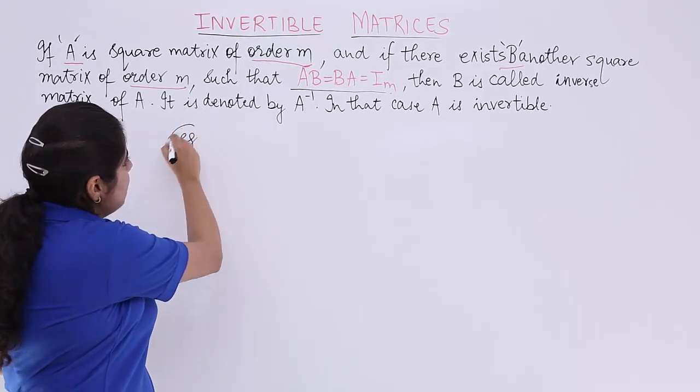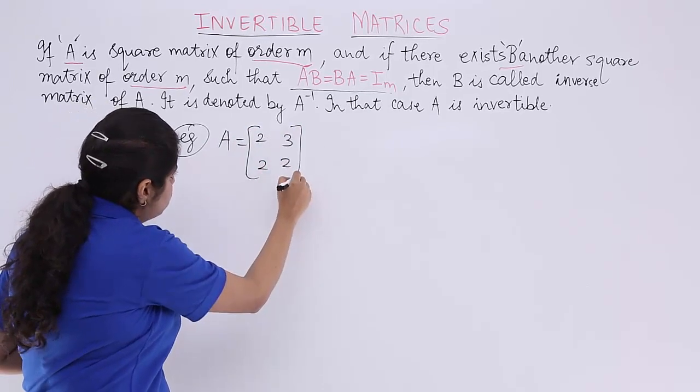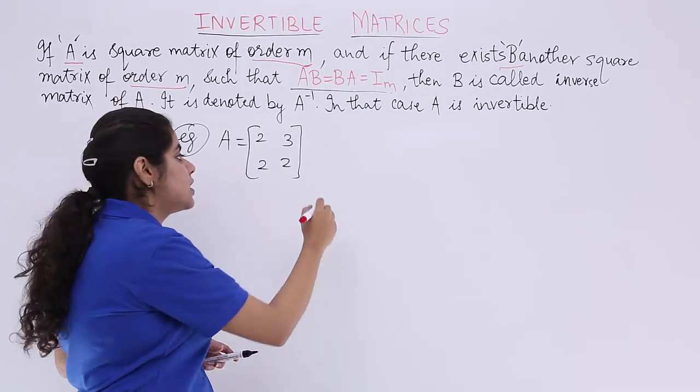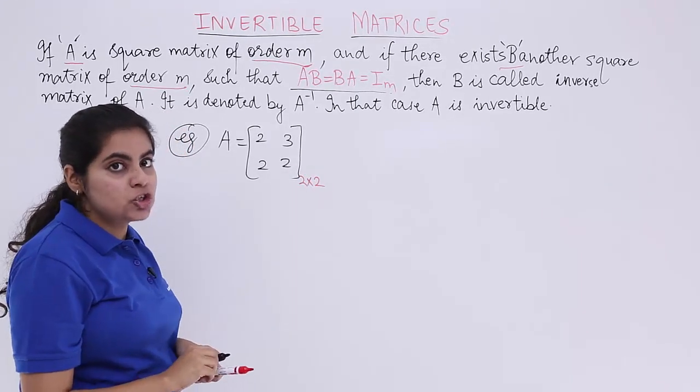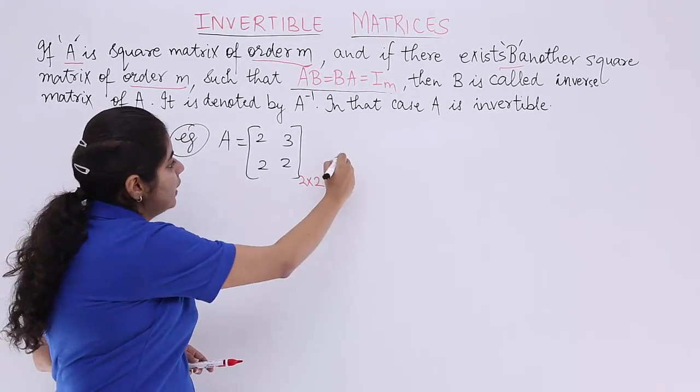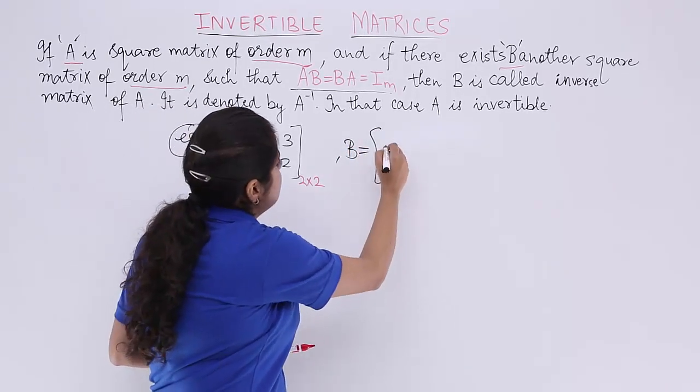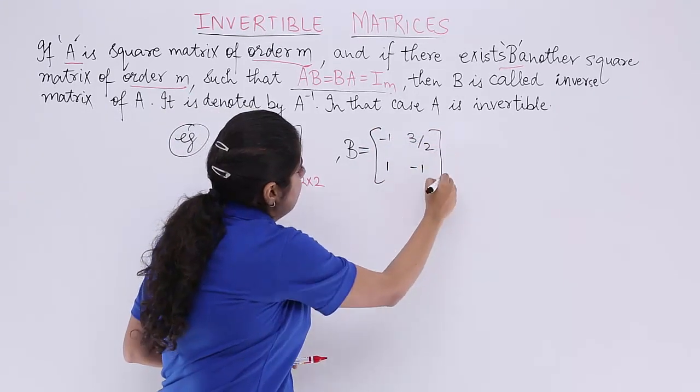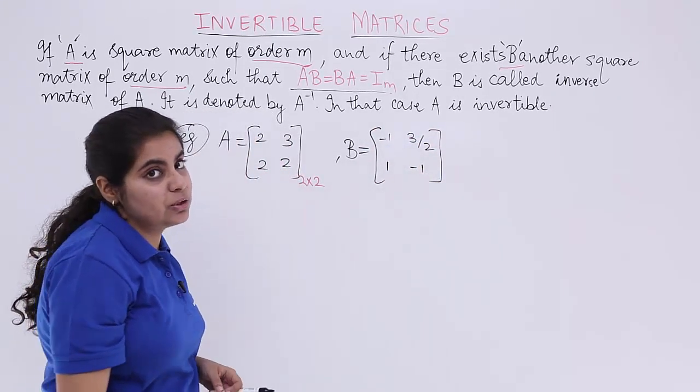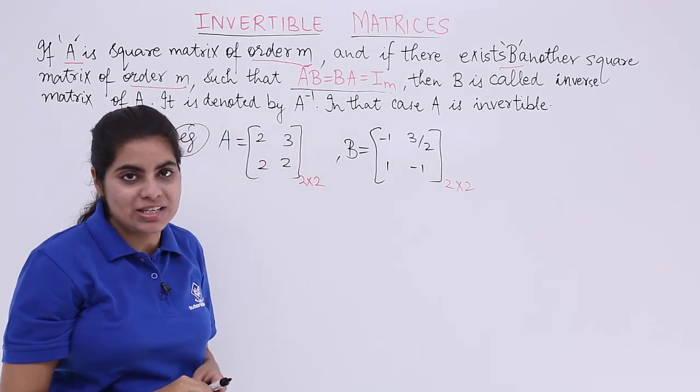Suppose I have a matrix A and that matrix is given to me as 2, 3, 2, 2. You see that it is a square matrix, why? Because the order is 2 by 2, 2 rows, 2 columns. Suppose I have another matrix B and the matrix is such that the elements are minus 1, 3 by 2, 1, minus 1 and you see again there are 2 rows and 2 columns. So it is a square matrix.